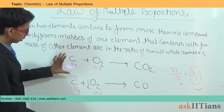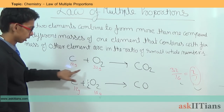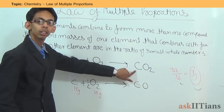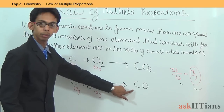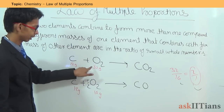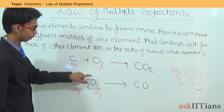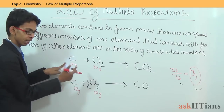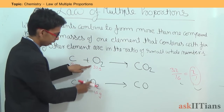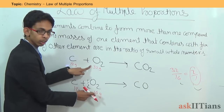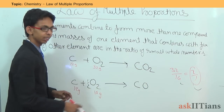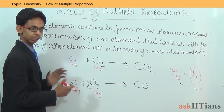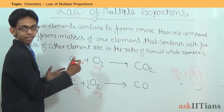The two elements carbon and oxygen combine to form more than one compound — carbon dioxide and carbon monoxide. The ratio of the different masses of oxygen combining with the fixed mass of carbon is 32 to 16, which equals 2 to 1 — a simple whole number ratio. This confirms the law of multiple proportions.